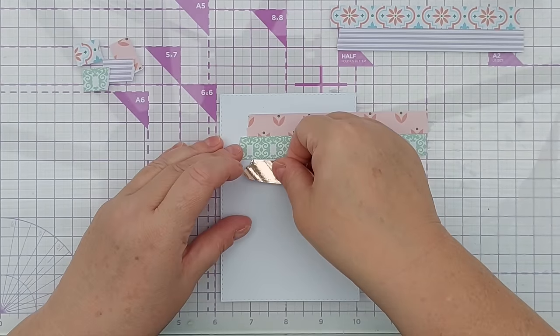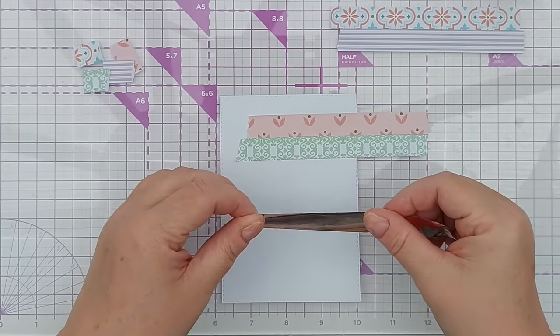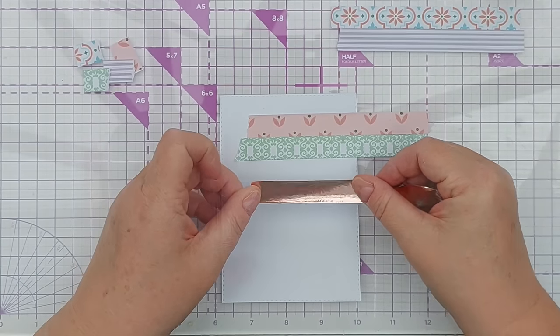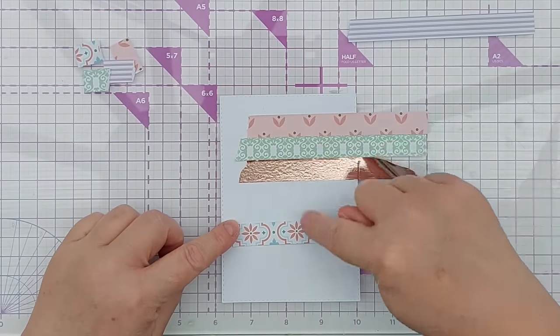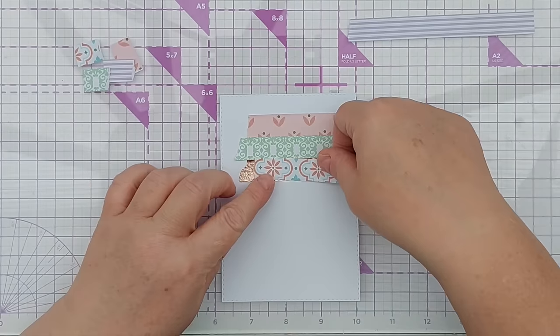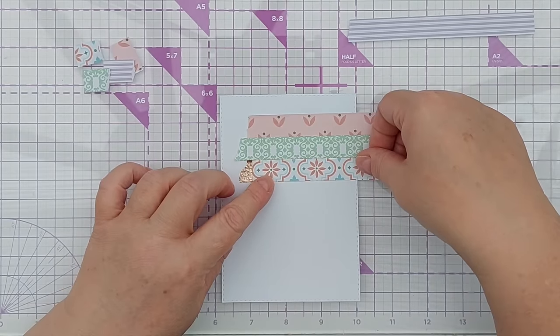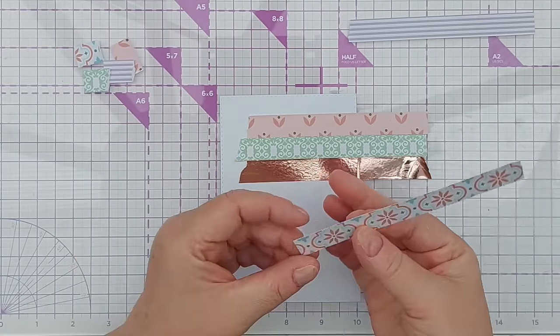So the rose gold is going to sit in the middle of my strips. The reason I put the rose gold there is because I want to separate these two patterns. They're quite busy and if you put them next to each other they might clash and not make a lot of sense. So having a solid in between them really helps.